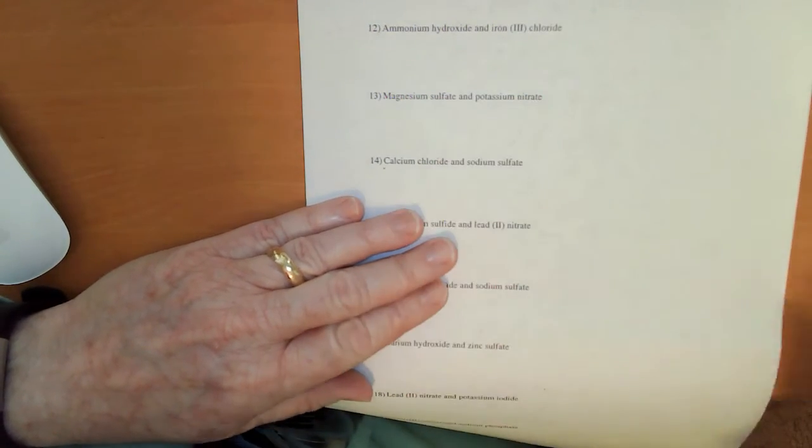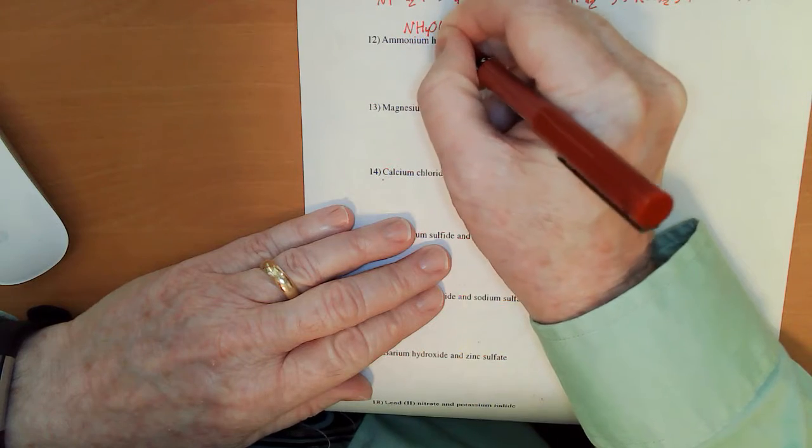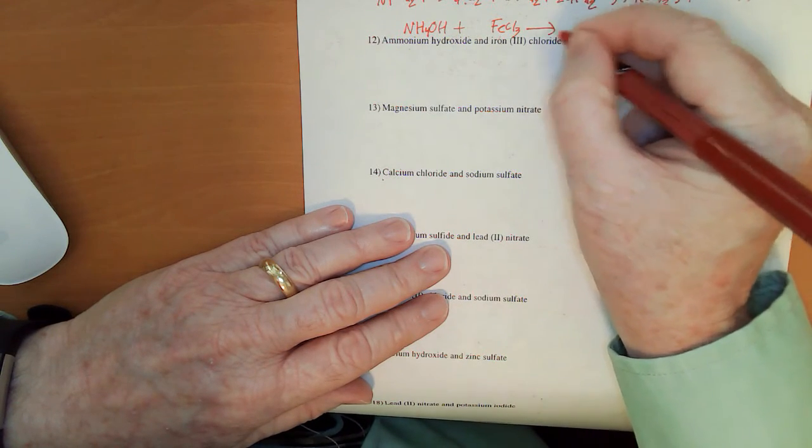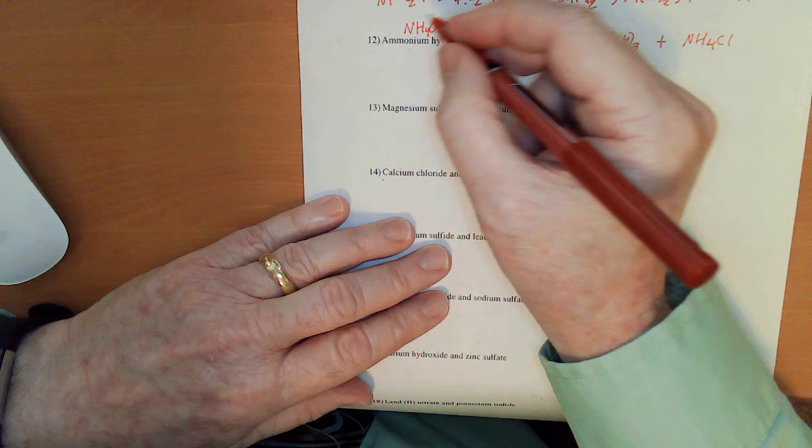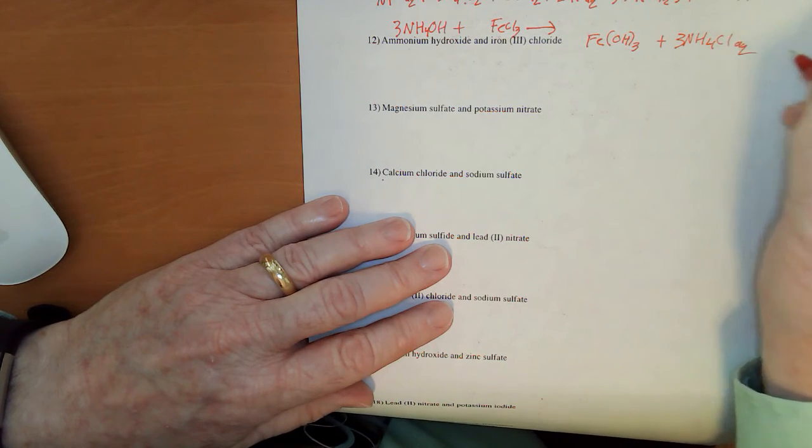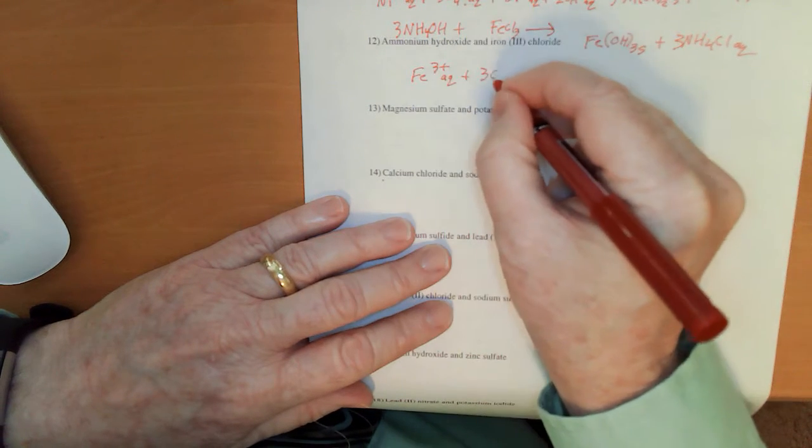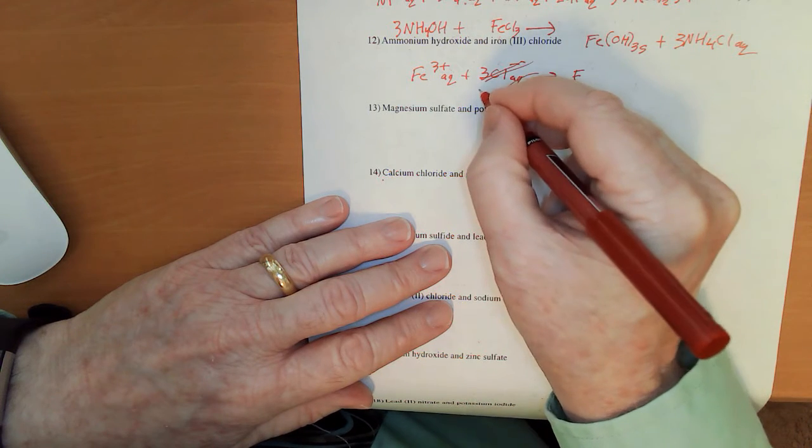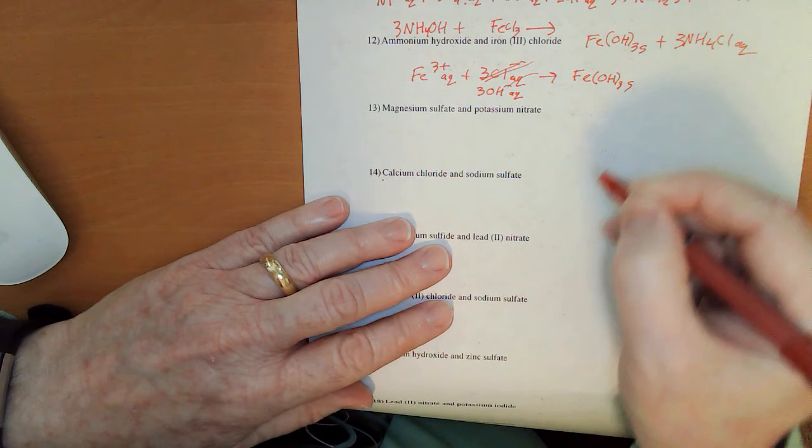Next we've got our ammonium hydroxide. NH4OH. We've got our iron 3 chloride. FeCl3. What are they going to give us? That's going to give us an Fe OH sub 3. FeCl3 there and I need to put a 3 there. Ammoniums are always soluble. Iron hydroxide is going to be a solid. So, I've got an Fe 3 plus aqueous. 3 Cl minus aqueous to give me... I'm sorry. Sorry folks. 3 OH minus aqueous to give me Fe OH sub 3 solid.